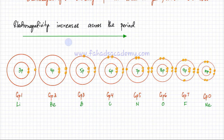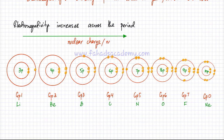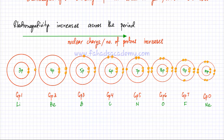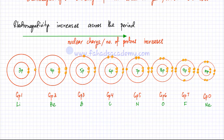As you move across the period, the nuclear charge — the number of protons — increases. The number of shells are exactly the same: lithium has two shells and fluorine also has two shells. So relatively, the sizes are almost pretty much the same, which means the shielding effect remains constant.